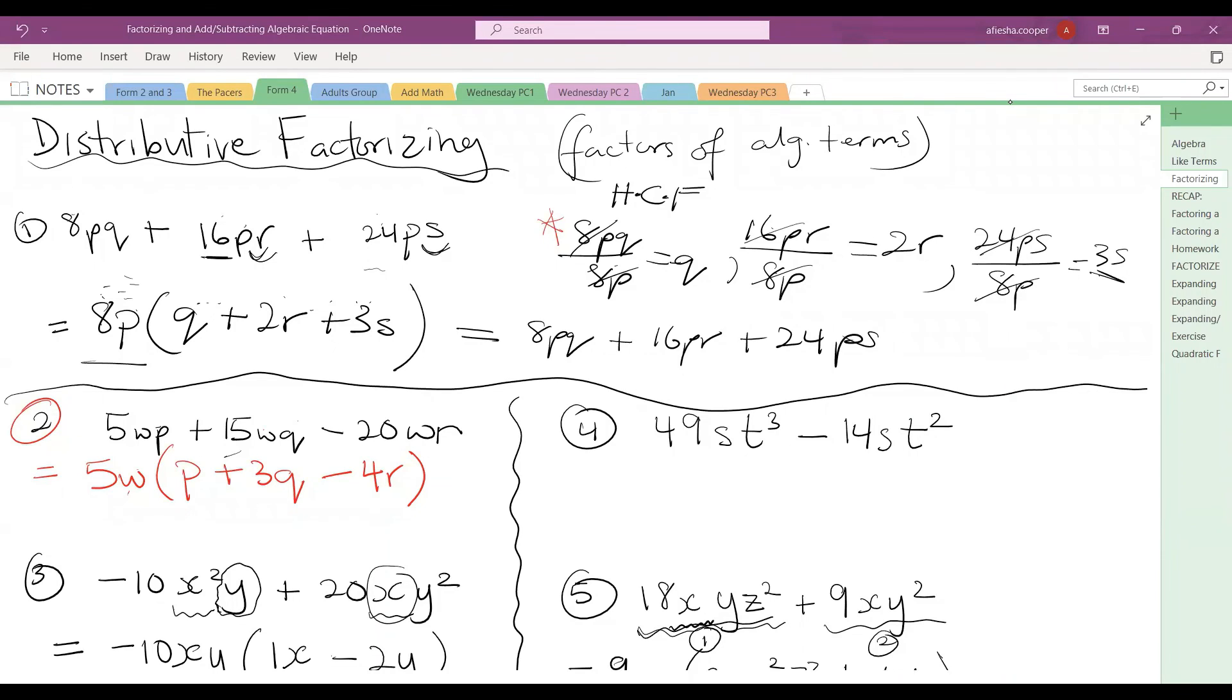So number 2 we did, we found the highest common factor between 5, 15 and 20, which is 5. And then between 5wp, 15wq and 20wr, W is our common factor. So we take our W, we divide 5wp by 5w to get p, 15wq by 5w to get 3q, and negative 20wr by 5w to get negative 4r.